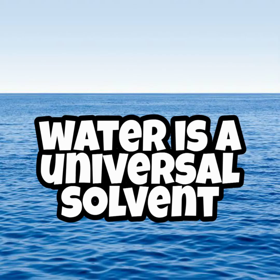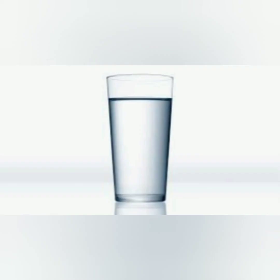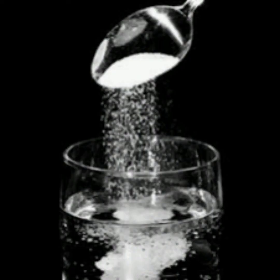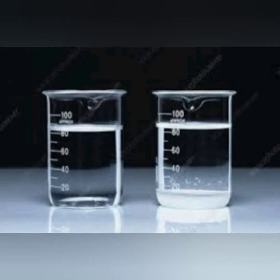Water is called a universal solvent. Why? Because most substances dissolve in water. When we take one glass of water and add one or two spoons of salt or sugar, it dissolves completely. But when we add more and more salt or sugar, it will not dissolve, and we can see salt particles separately in the water.